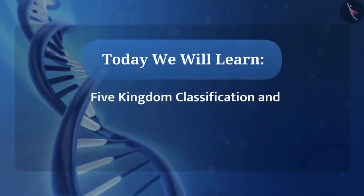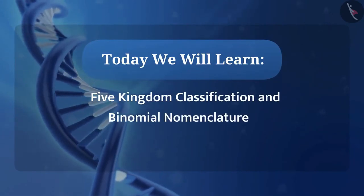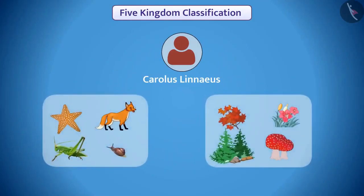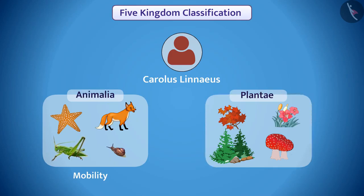Today we will learn five kingdom classification and binomial nomenclature. In the beginning, Carlos Linus divided the organisms into two kingdoms: Animalia and Plantae. This classification was made on the basis of mobility of the organism. Those organisms which can change their place are kept in kingdom Animalia, and those which cannot are kept in kingdom Plantae.